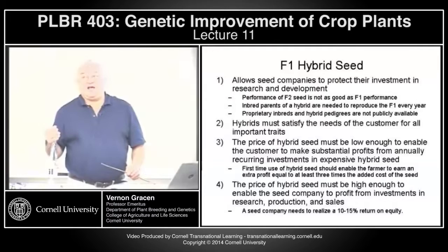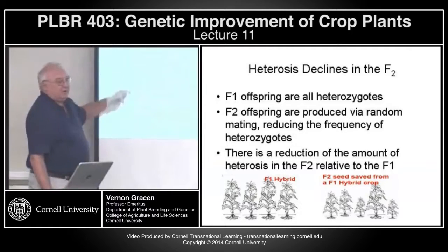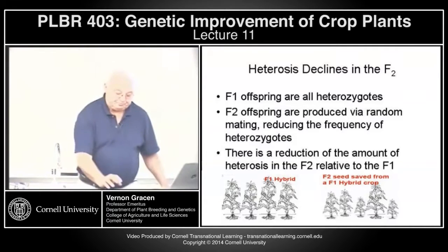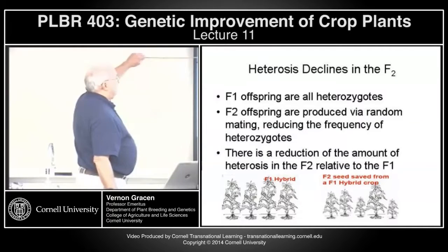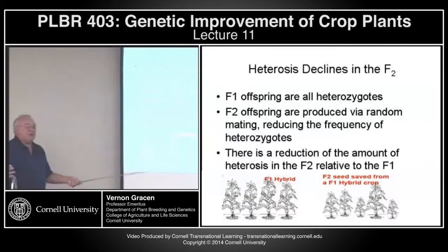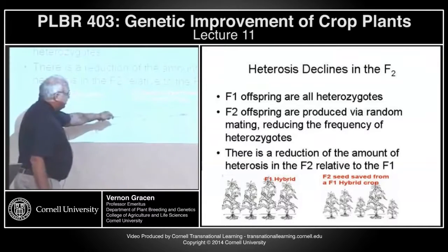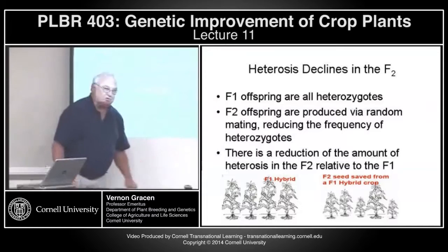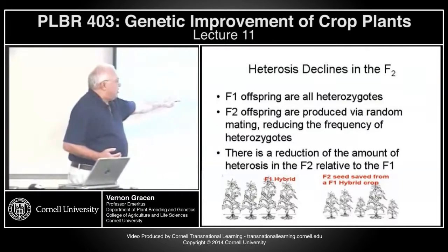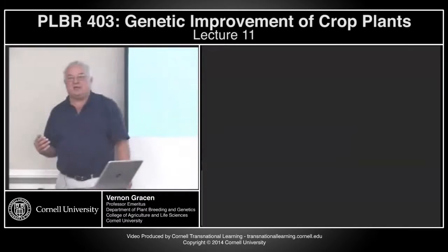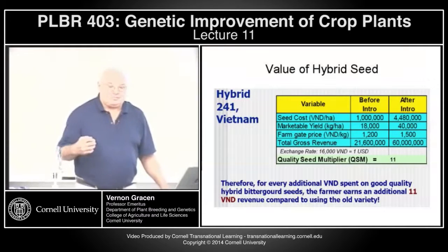The factors that determine volume of seed sold are the competitiveness of your hybrids to meet all the traits that the customer needs. Regarding heterosis decline in the F2: the F2 offspring are produced by random mating, like in an open-pollinated variety. You get some very productive plants, but also plants that show various degrees of inbreeding, so there's enough reduction in F2 performance that economically it makes sense for the farmer to buy F1 hybrid seed and plant it every year.